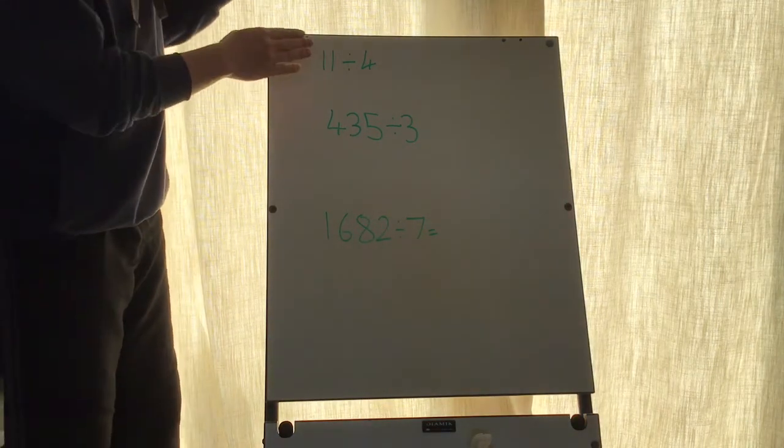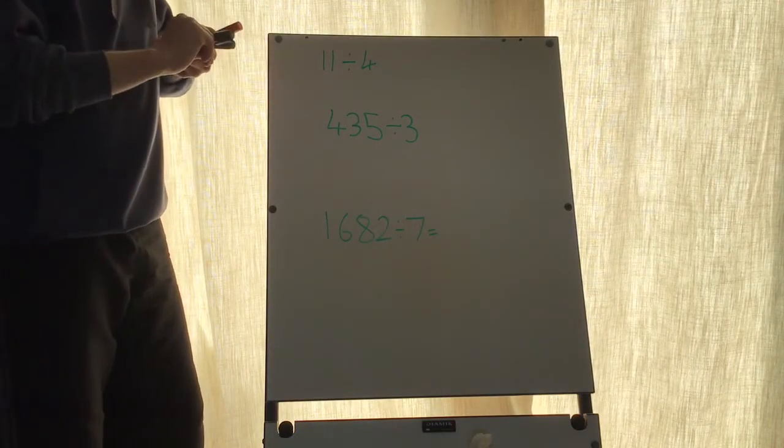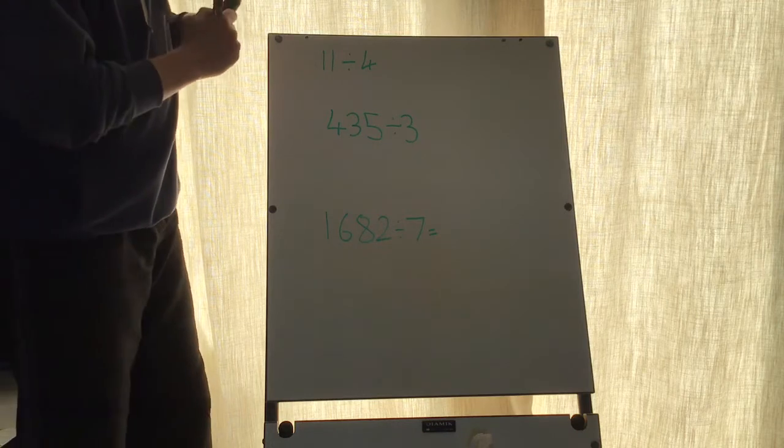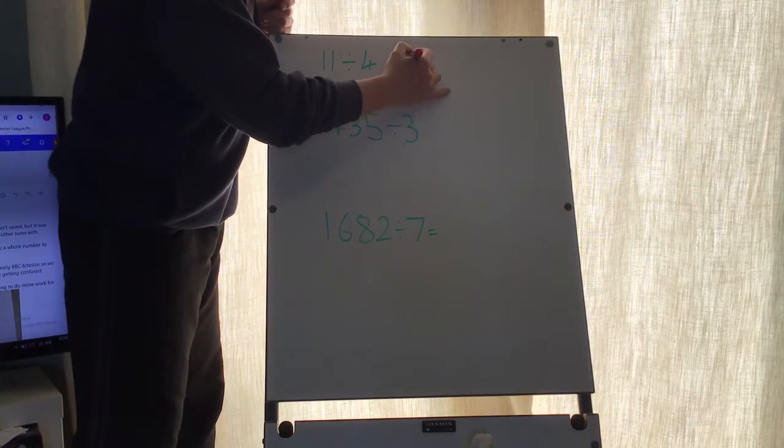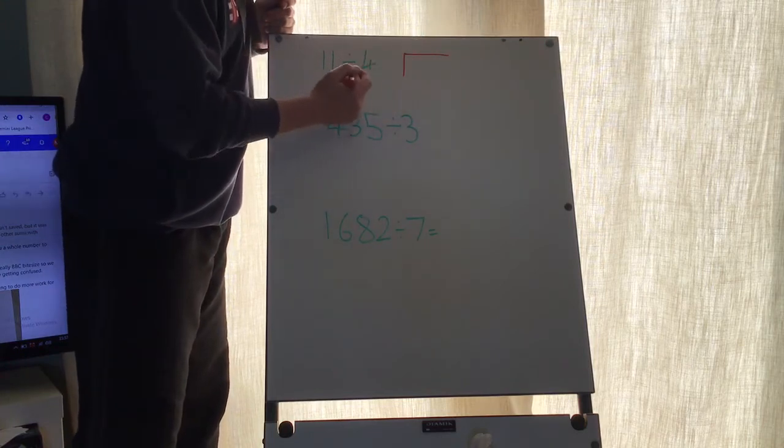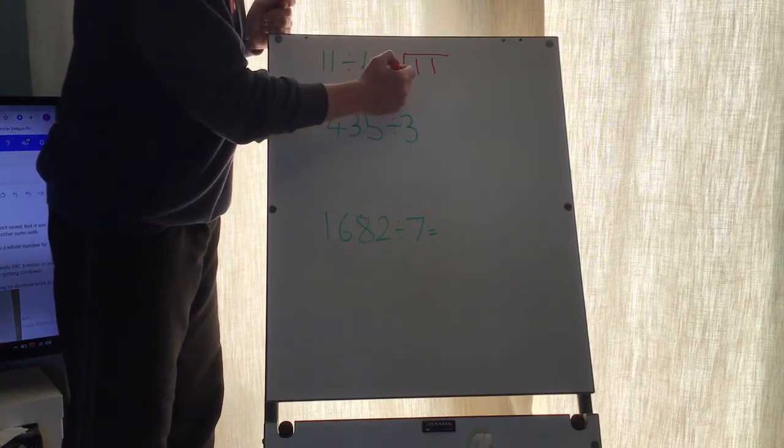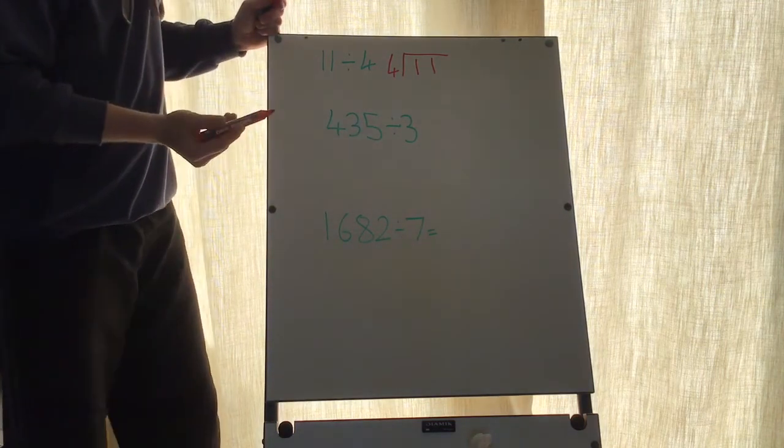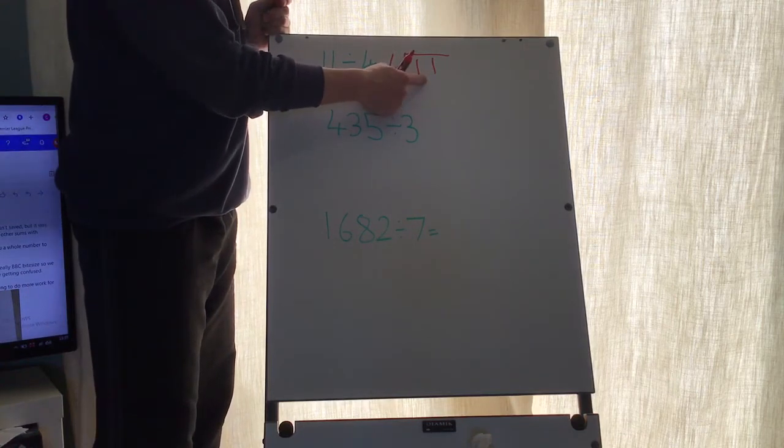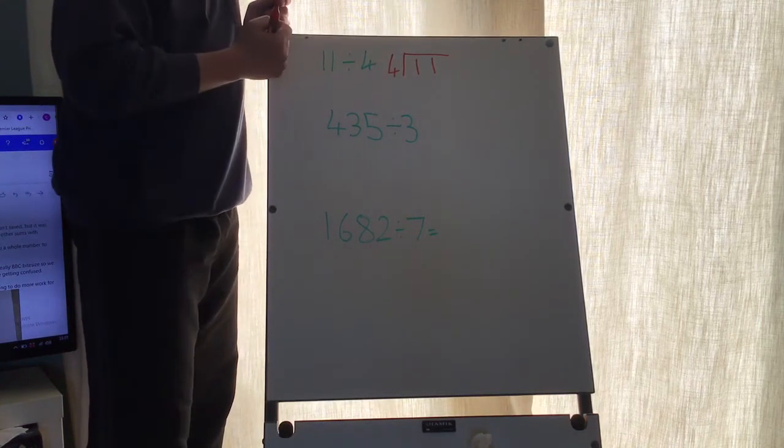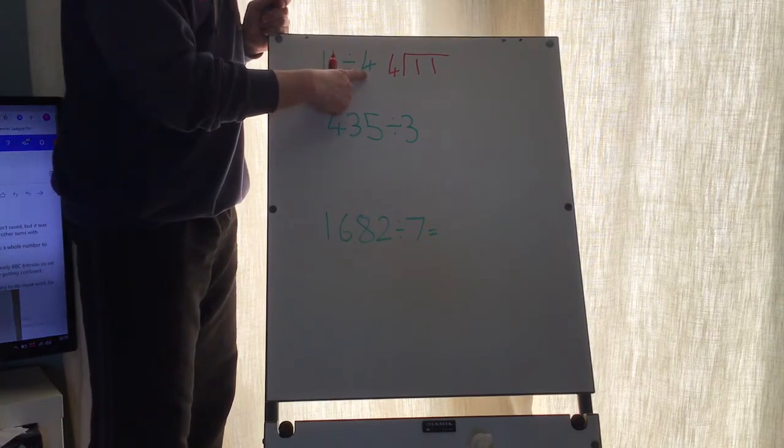So the top one says 11 divided by 4. This is really simple because I want to show something else to start with. If you were to write this, the 11 goes under the bus stop, this is called bus stop method, and the 4 is on the outside. So the 4 is the divisor, the 11 is the dividend, and the answer will be the quotient.